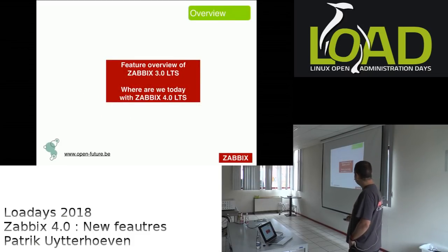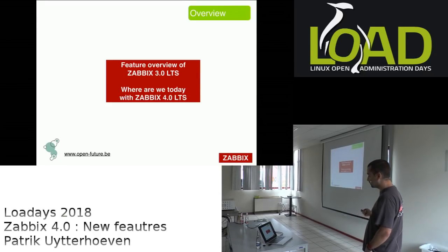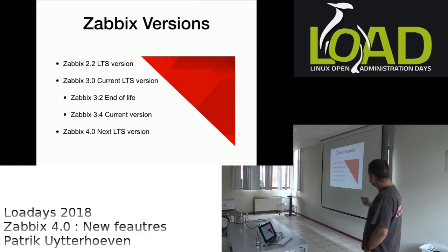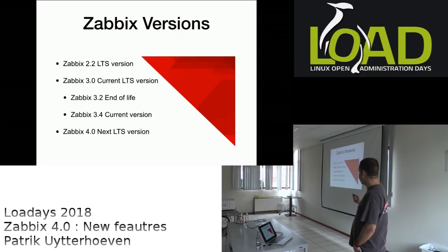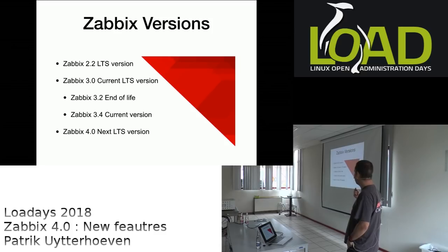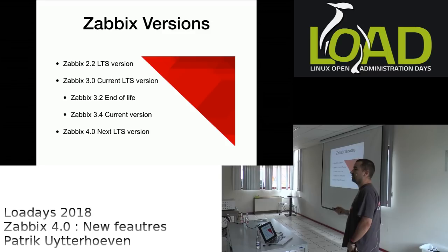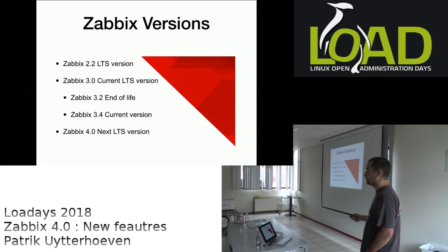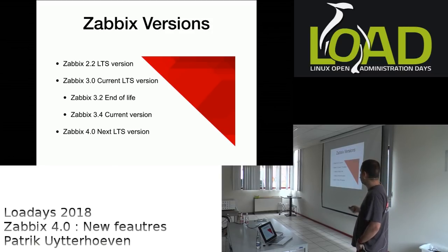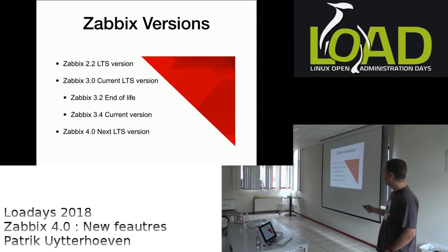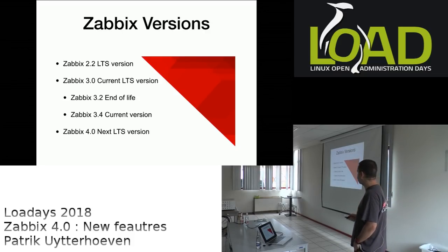Here's an overview of Zabbix 3.0 LTS and where we are today with 4.0. At the moment there are a few versions available: version 2.2, which is an LTS version, and version 3.0, which is the current LTS version. LTS 2.2 support is almost finished and will end soon, so it's best to go with 3.0. If you need new features not available in 3.0, you can go to 3.2 or 3.4, but 3.2 is already end of life.